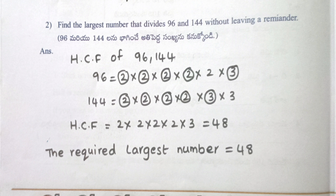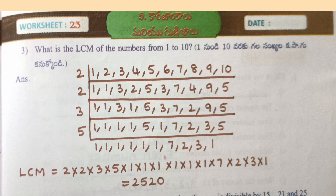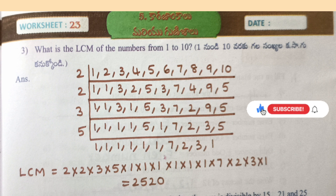Find the largest number that divides 96 and 144 without leaving a remainder. HCF of 96 and 144 = 2×2×2×2×3 = 48. The required largest number is 48. The LCM of numbers from 1 to 10 is 2×2×3×5×7×2×3 = 2520.